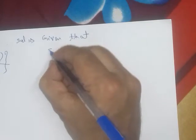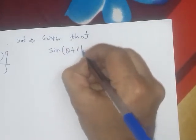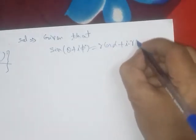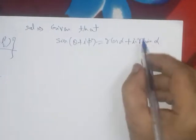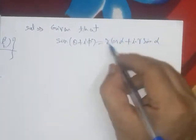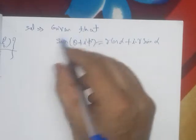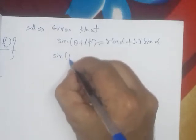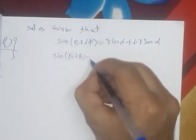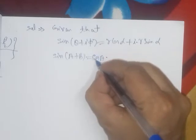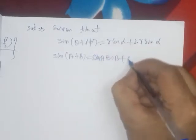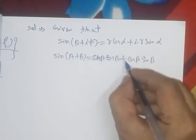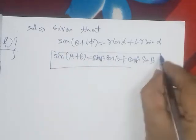It is given that sin(θ + iφ) = r·cos α + i·r·sin α. On the right-hand side the real part and imaginary part are separate. On the left-hand side we will use the identity sin(a + b) = sin a·cos b + cos a·sin b.